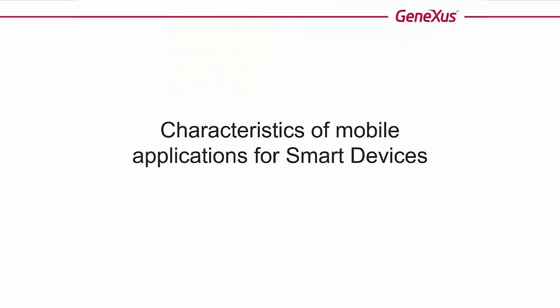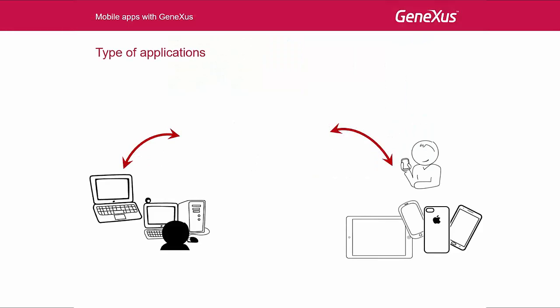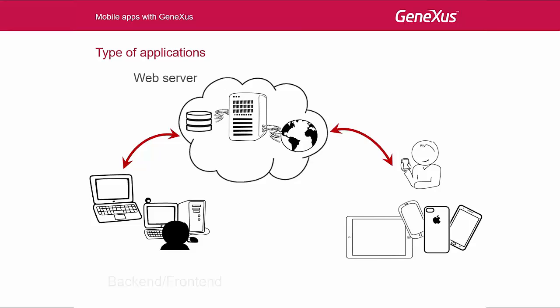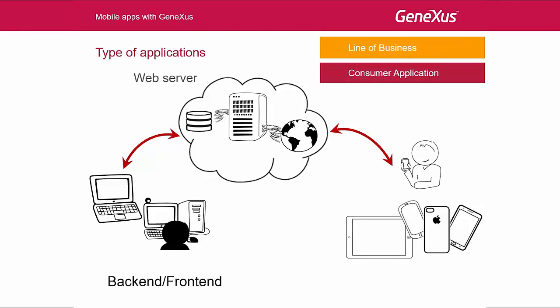Now we will talk about the main characteristics of these types of applications. Every smart device application that we develop will always have to be partially executed on a web server. This not only applies to line of business applications — that is to say, a smart device application that is only part of an enterprise application — but also to consumer applications, that is to say, applications designed to be uploaded to the markets of the corresponding technologies and which can later be downloaded by any user in both free and paid versions.